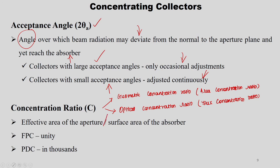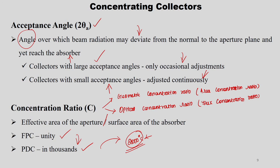Geometric concentration ratio is the ratio of the effective area of the aperture to the surface area of the absorber. For FPC it is unity since aperture area and absorber area are the same. For a parabolic dish concentrator (PDC), it is in the thousands, which is why it can produce temperatures around 2000°C for high temperature applications — though design limitations prevent achieving the ideal ratio in practice.